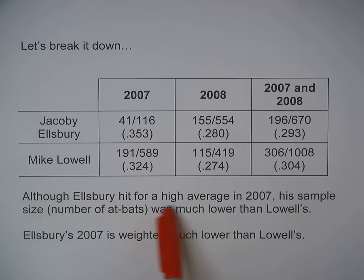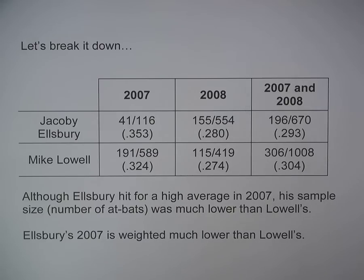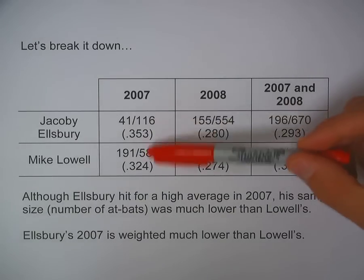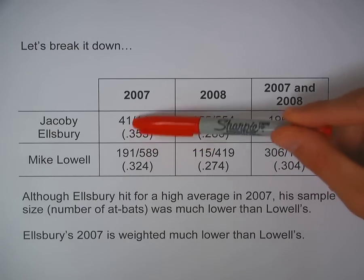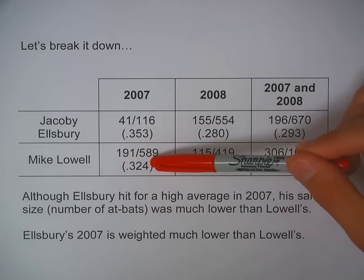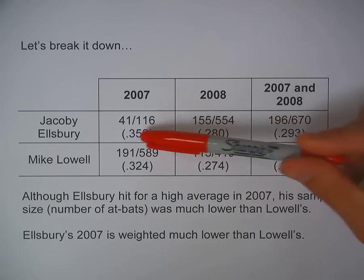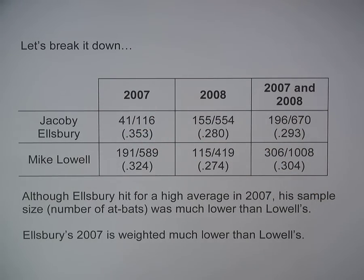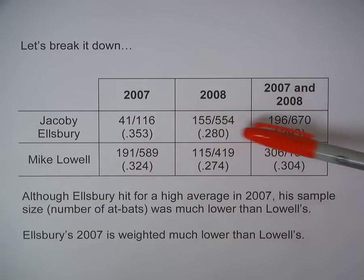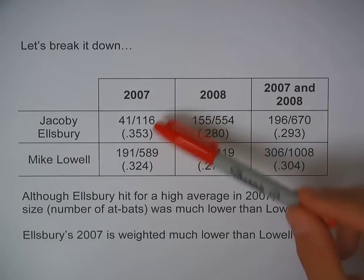Although Ellsbury hit for a higher average in 2007, his sample size — his number of at-bats — was much lower than Lowell's. Even though he had a much higher average, it was based on much fewer at-bats. Lowell's 2007 year was weighted a lot more than Ellsbury's 2007 at-bats. This is Simpson's paradox because, although it looks like Ellsbury hit better in both years, his combined average was not better because of that small sample size.